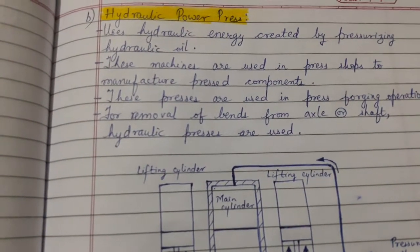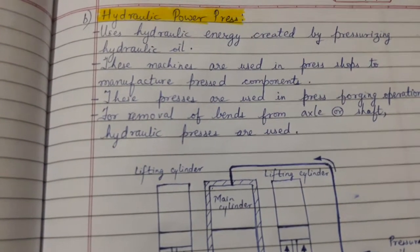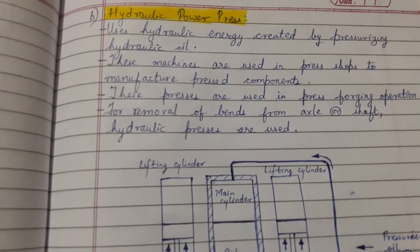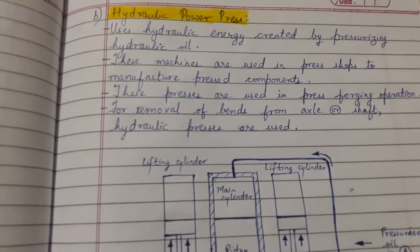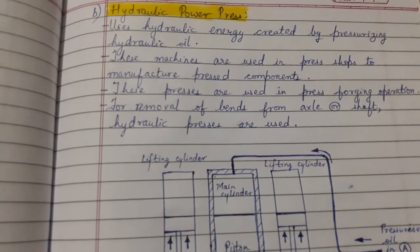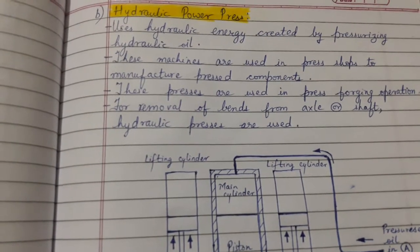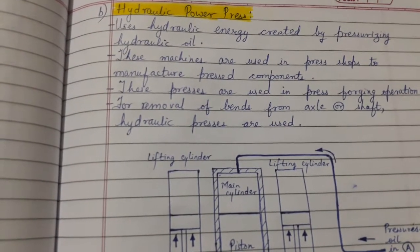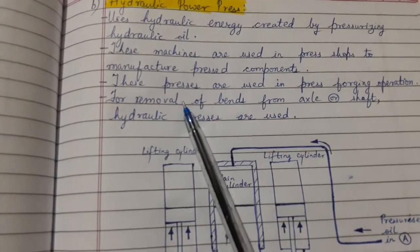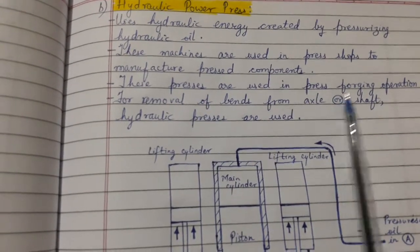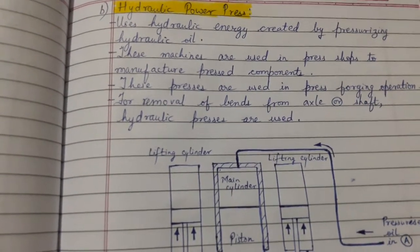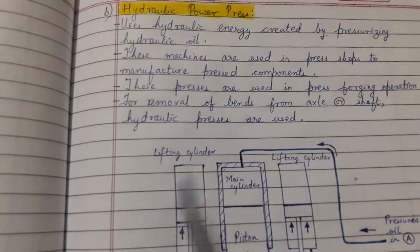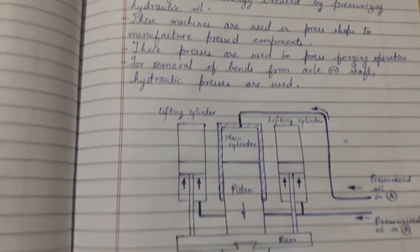The next application is the hydraulic power press. It uses hydraulic energy created by pressurizing oil. These machines are used in press shops to manufacture pressed components. These presses are used in press forging operations and for removal of bends from axles or shafts.